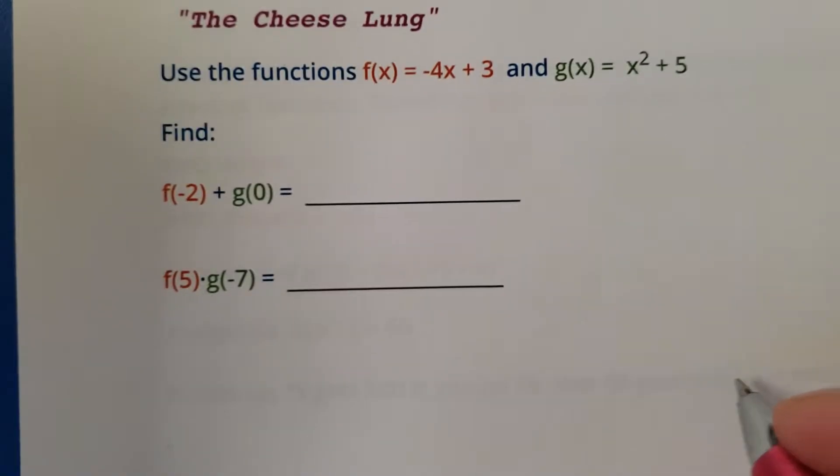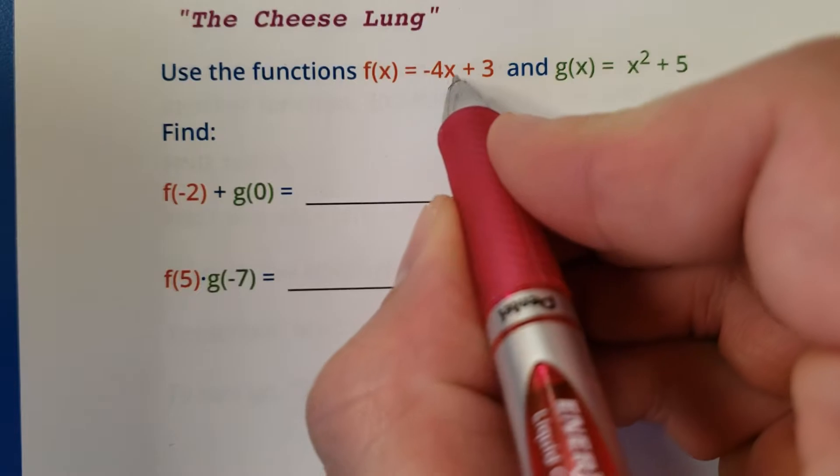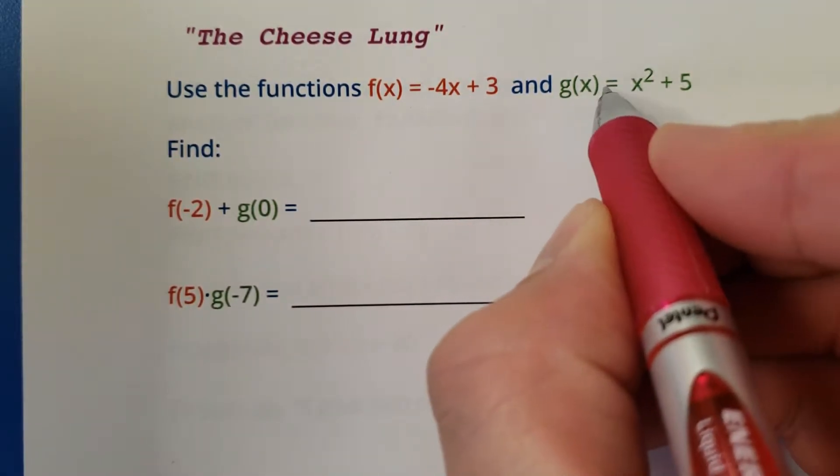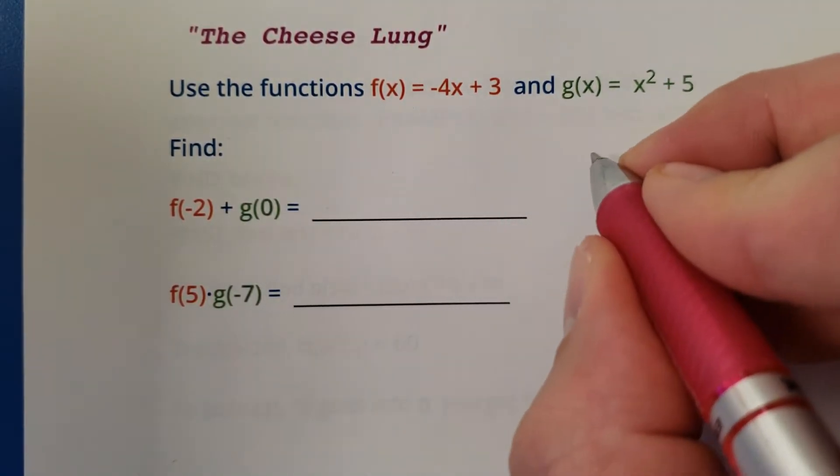Oh, I know what's going on here. We need to put a negative 2 in here and then a 0 in here and then add the result. So let's go ahead and do that really quick.